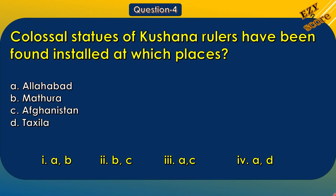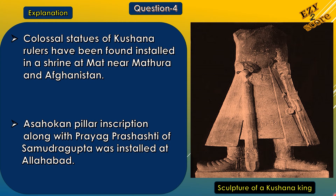Question 4: Colossal statues of Kushana rulers have been found installed at which places? A. Allahabad, B. Mathura, C. Afghanistan, D. Takshashila. Options: 1st A and B, 2nd B and C, 3rd A and C, 4th A and D. The correct answer is the 2nd option, B and C — Mathura and Afghanistan. Colossal statues of Kushana rulers have been found installed in a shrine at Mart near Mathura and in Afghanistan. The Ashokan Pillar inscription along with the Prayag Prashasti of Samudra Gupta was installed at Allahabad. You can see a sculpture of a Kushana king, probably Kanishka.